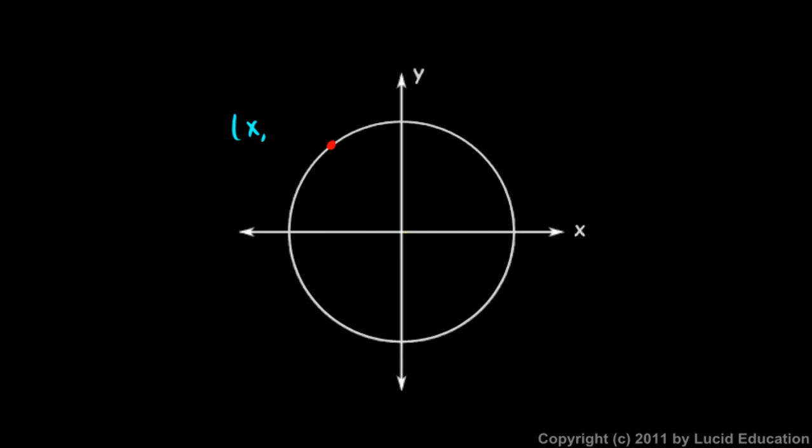The terminal side of my angle is here, so this is my rotation. But I can still come straight down from this point and make a little right triangle sitting there on the x-axis.